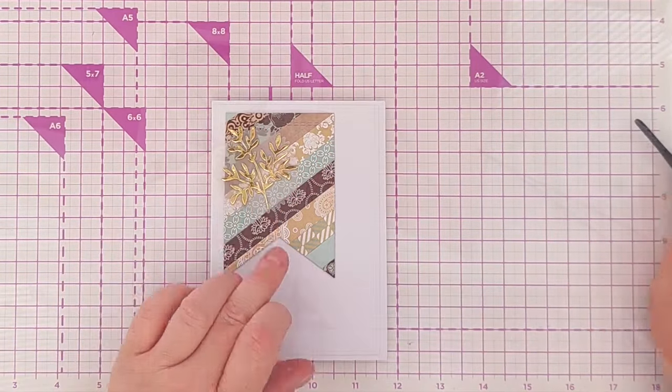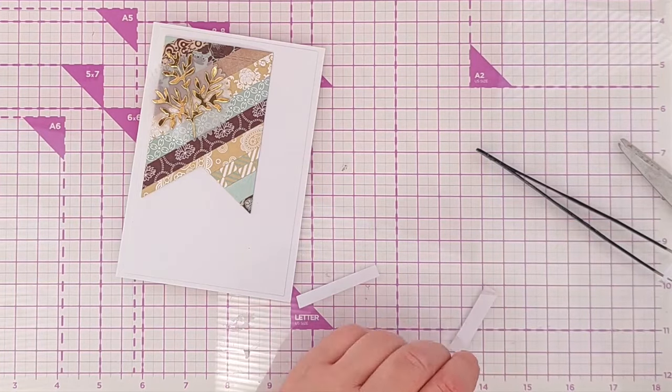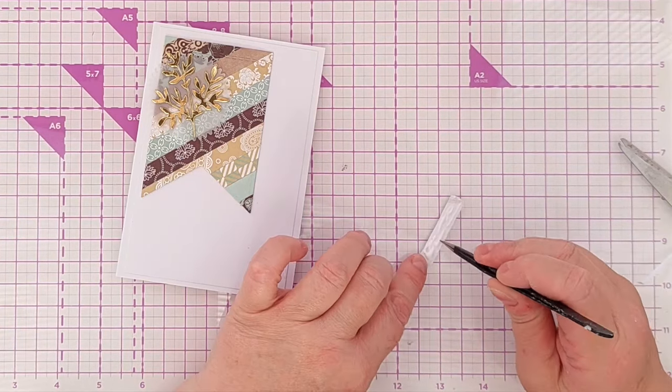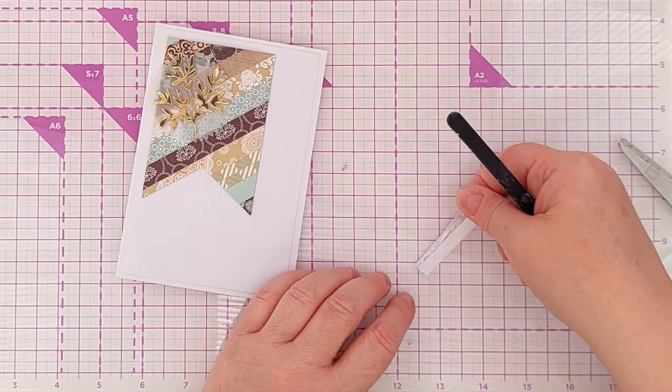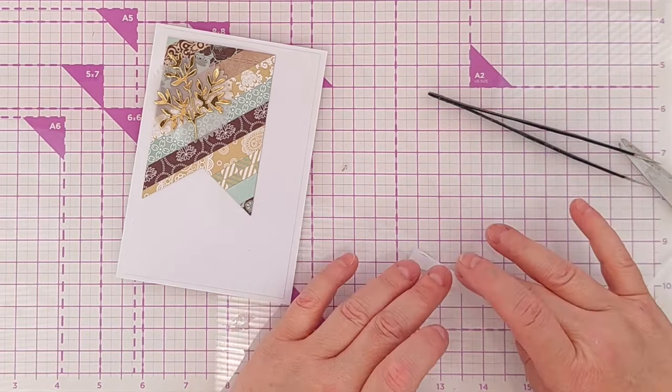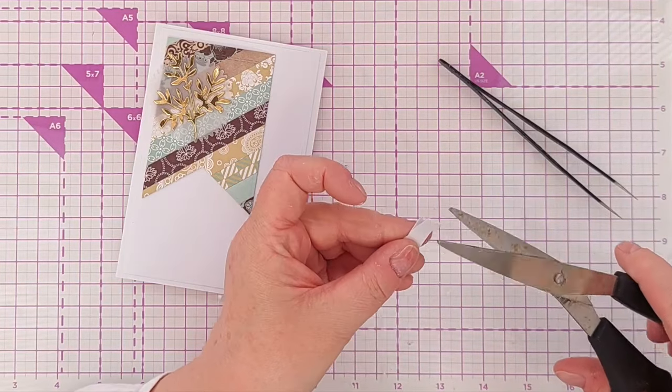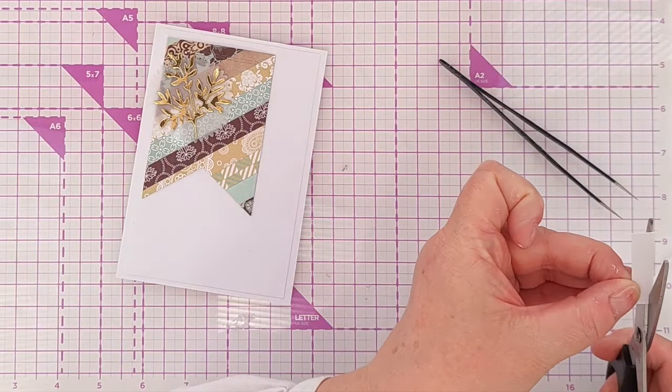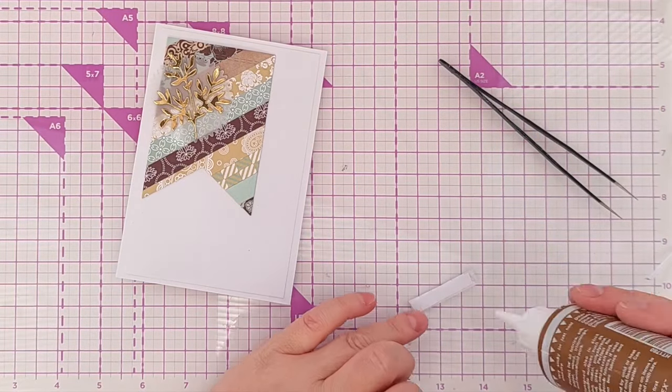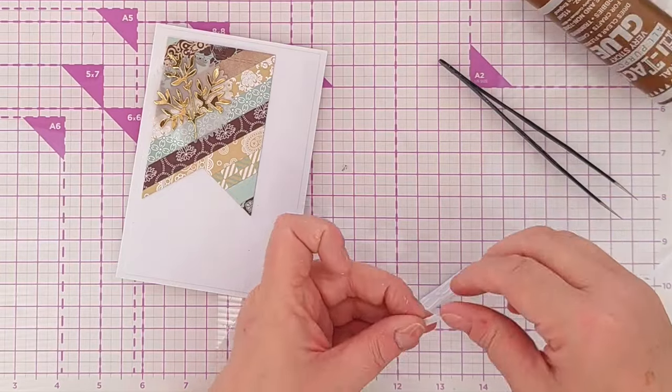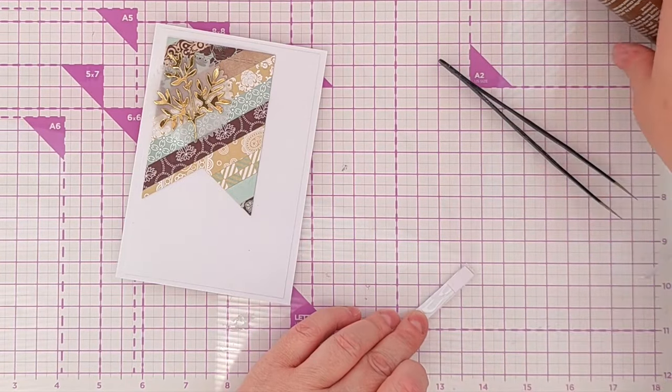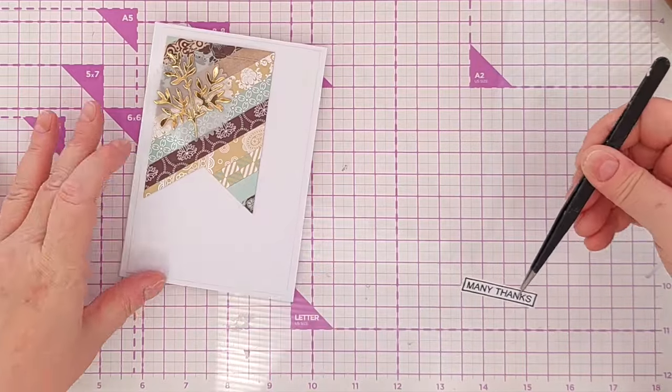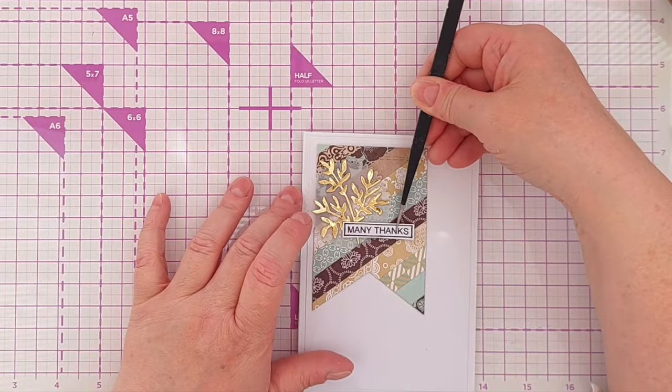For my sentiment I chose a mini thanks that I'd stamped and cut out a few nights ago. Again I wanted to give it a bit of dimension but not as much as if I'd used foam tape, so I cut a little sliver of paper and popped it behind the sentiment strip. And because the sentiment was going to go over the bottom of the branch I added an extra bit of card to the right hand side of the sentiment so that it would remain level as it sat over that branch stem. And I think the black on white sentiment worked really well because it brings some white to the foreground and the black ink tones in nicely with the darkest of the stripes.